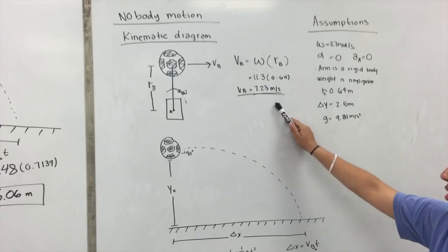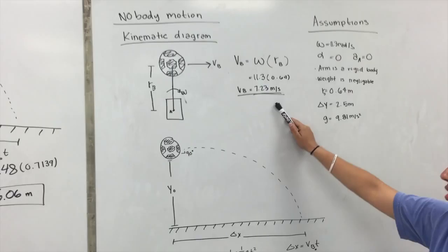Then we move over here to solve for VB, and we use the equation VB equals omega times RB. When we plug in the calculations that we had, we find that VB equals 7.23 meters per second.